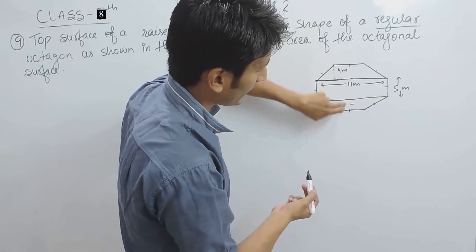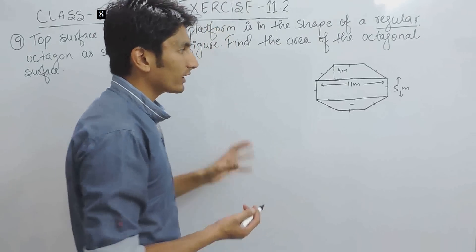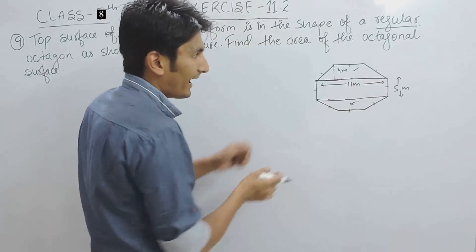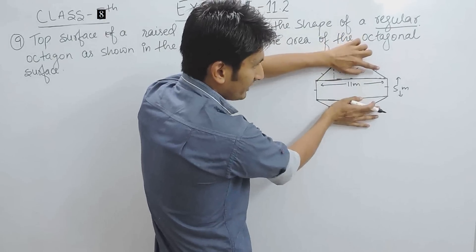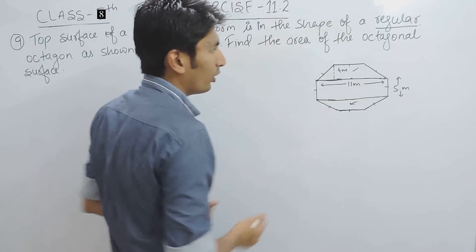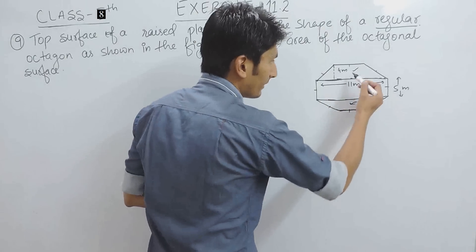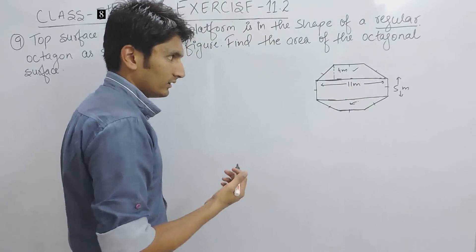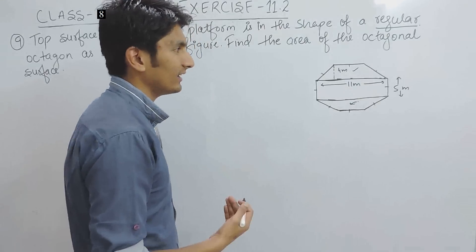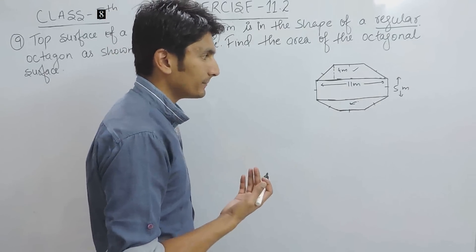And these two trapezium would be similar or would be congruent means these two will be equal in area. And when we see between these two trapezium, we will find a rectangle. Now we have two trapezium and one rectangle and we know how to calculate the area of a rectangle and area of trapezium.